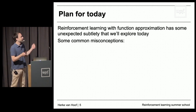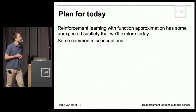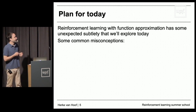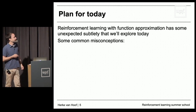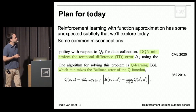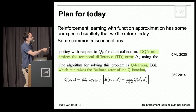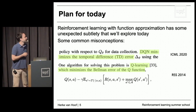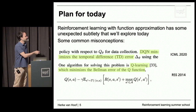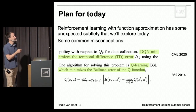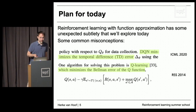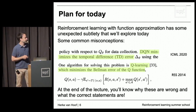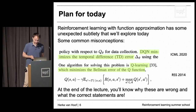Reinforcement learning with function approximation actually has some unexpected subtlety — you can't just open the deep learning toolbox and apply it to RL problems, because you'll find that it doesn't always work intuitively. We'll explore that today. To start with some common misconceptions: a paper from a recent ICML said DQN minimizes the temporal difference error, and another from RSS said Q-learning minimizes the Bellman error. Both of these are not true, and at the end of today's lecture you'll know why — and what the correct statement is.